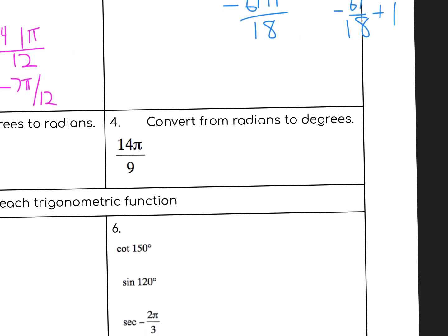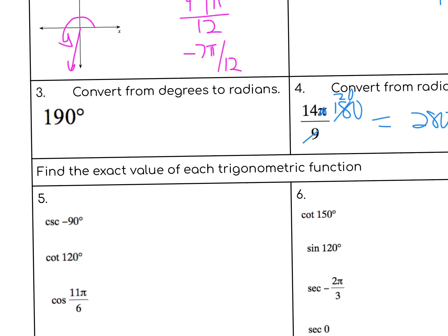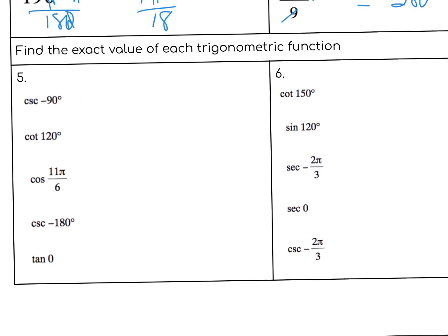Convert from radians to degrees. That's like 180 — 180 over 9 is 20, so that's 14 times 2 which is 28, so 280 degrees. What do I got up here — 190? Get rid of those, so it's 19π/18. That is it.